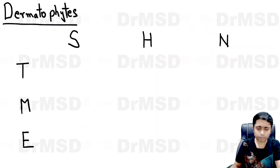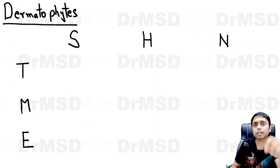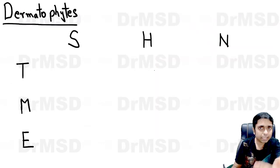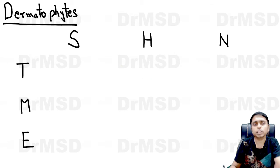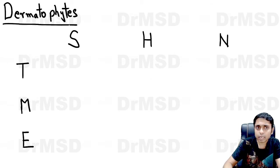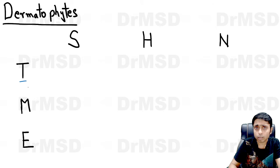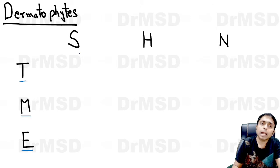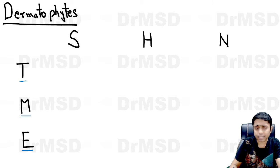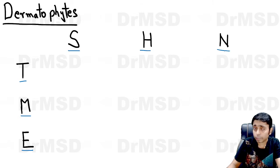Before looking at the explanation, you should know that dermatophytes are of three types: Trichophyton, Microsporum, and Epidermophyton. These dermatophytes infect and involve either skin, hair, or nails in different combinations.